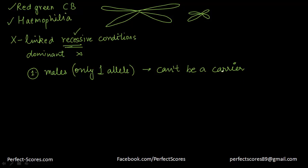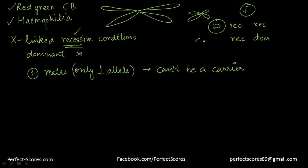To be a carrier you need one dominant and one recessive allele. In case of females: recessive-recessive gives rise to the disease; recessive-dominant gives rise to the person becoming a carrier; and dominant-dominant gives rise to no disease at all.